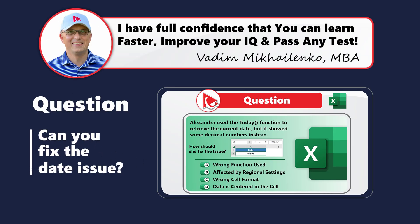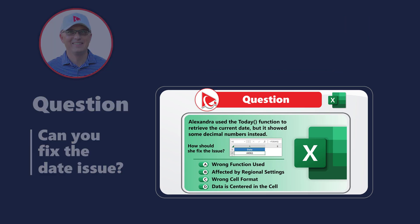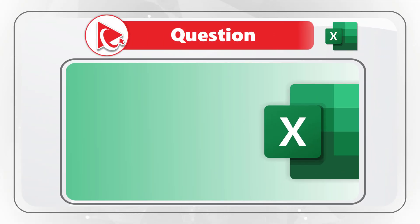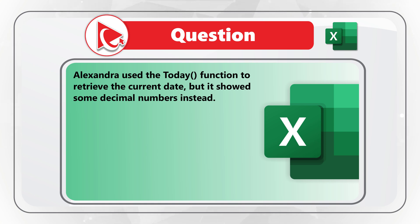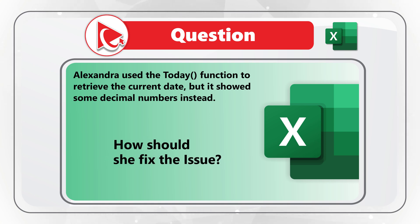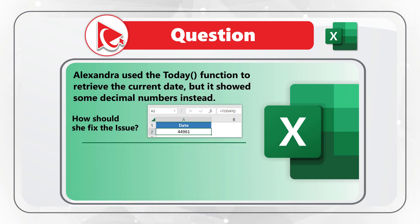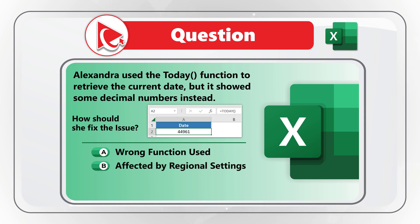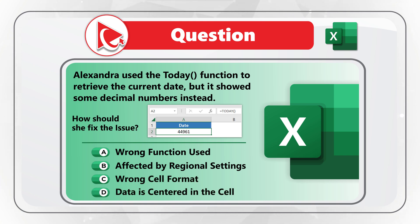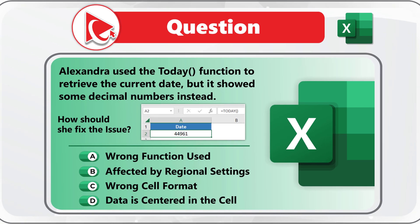Here's an amazing question which is not as easy to solve as it seems. Alexandra used the TODAY function to retrieve the current date, but it showed some decimal numbers. How should she fix the issue? You're presented with a snippet from Excel showing the date and the format in cell A2, and the formula bar shows the TODAY function. You need to select one of four choices: A) wrong function used, B) affected by regional settings, C) wrong cell format, or D) data is centered in a cell.